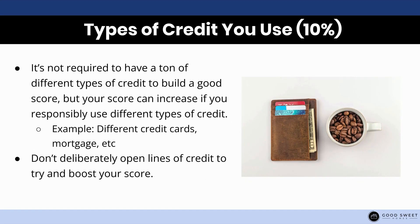Finally, the last component is the different types of credit that you use, also known as your credit mix. It's not required to have a ton of different types of credit to build a good credit score, but your score does increase — it's like a bonus if you're responsible with the different types of credit you use. Examples of different types of credit include credit cards, a mortgage, and a car loan. That being said, don't deliberately open up different lines of credit just to try to boost your score. Just use what you have normally and you will eventually see your score increase.